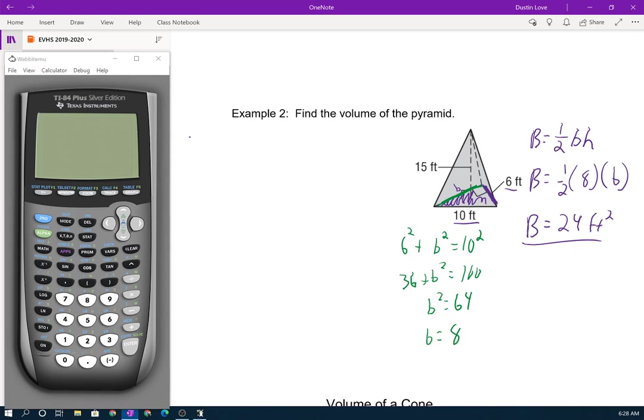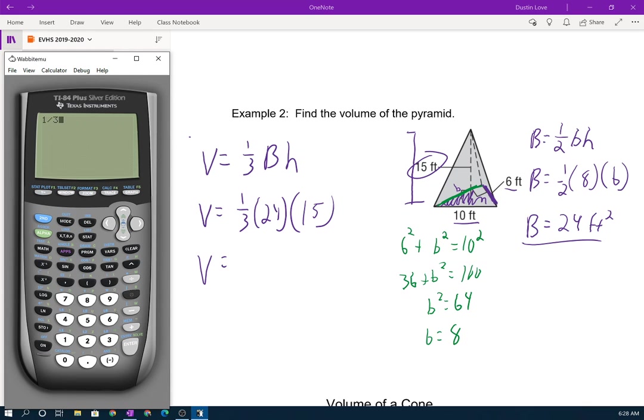Awesome. I've got the area of my base. Now, I'm going to jump over to the left and do volume of the pyramid, which is 1 third times area of the base times the height of the pyramid, which is this distance, and that is 15. Let's plug in what we know. Area of the base was 24. Height is 15. 1 third times 24 times 15. 120 feet cubed. A little bit more difficult because we had to calculate that extra side of the pyramid and then move on from there.